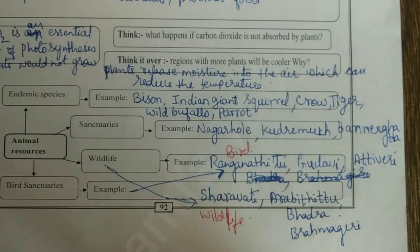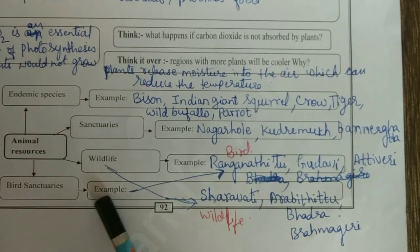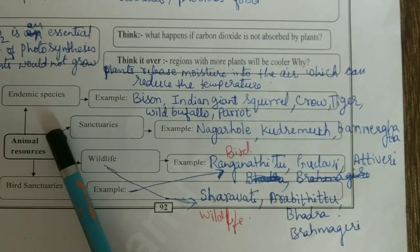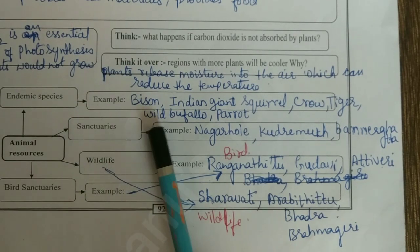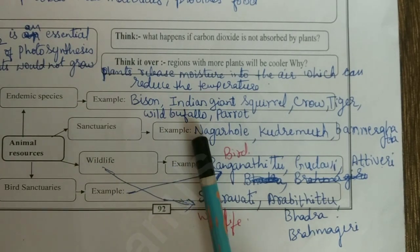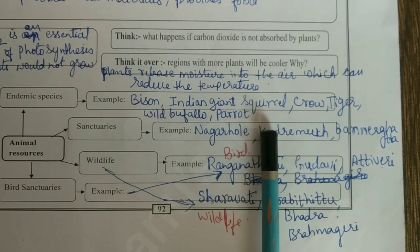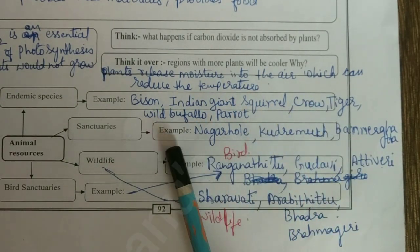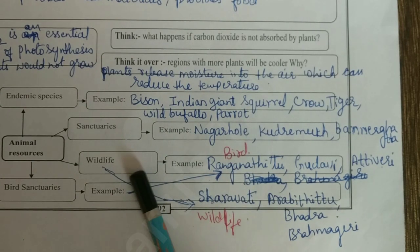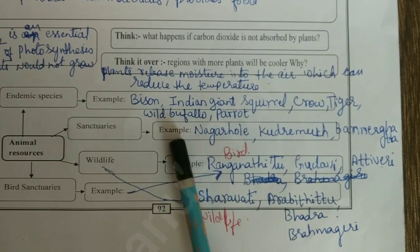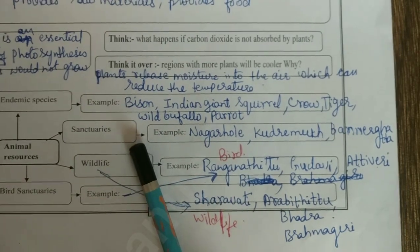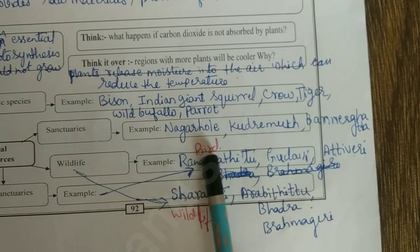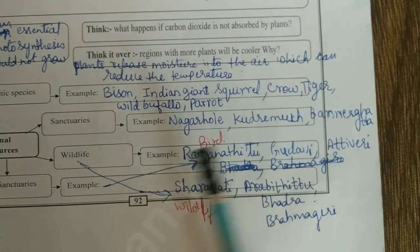This is the animal resources flowchart. Endemic species: bison, Indian giant squirrel, crow, tiger, wild buffalo, and parrot. We have to write examples for sanctuaries: Nagarhole, Kudremukh, Bannerghatta.